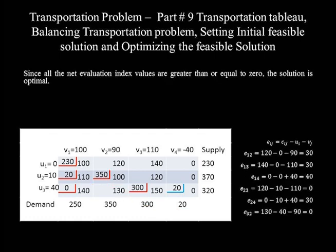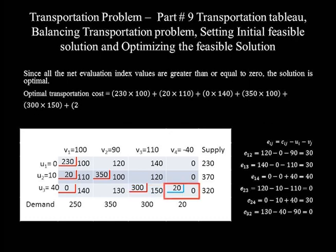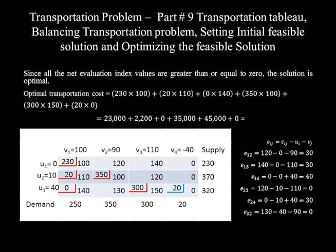The optimal transportation cost equals 230 times 100 plus 20 times 110 plus 0 times 140 plus 350 times 100 plus 300 times 150 plus 20 times 0. This gives 23,000 plus 2,200 plus 0 plus 35,000 plus 45,000 plus 0, which sums to 105,200 dollars. Therefore the total optimal transportation cost is $105,200.